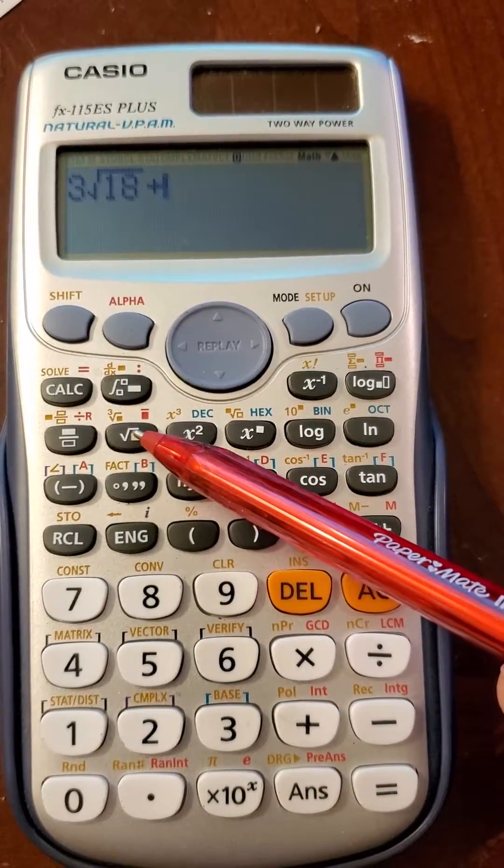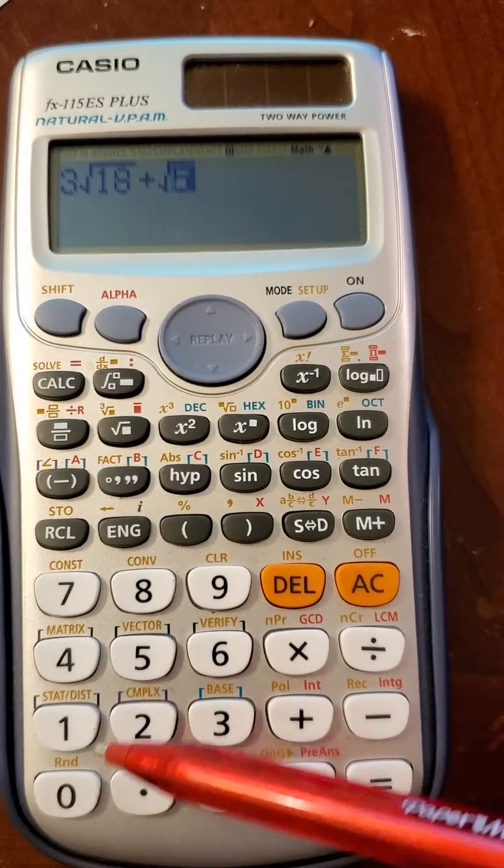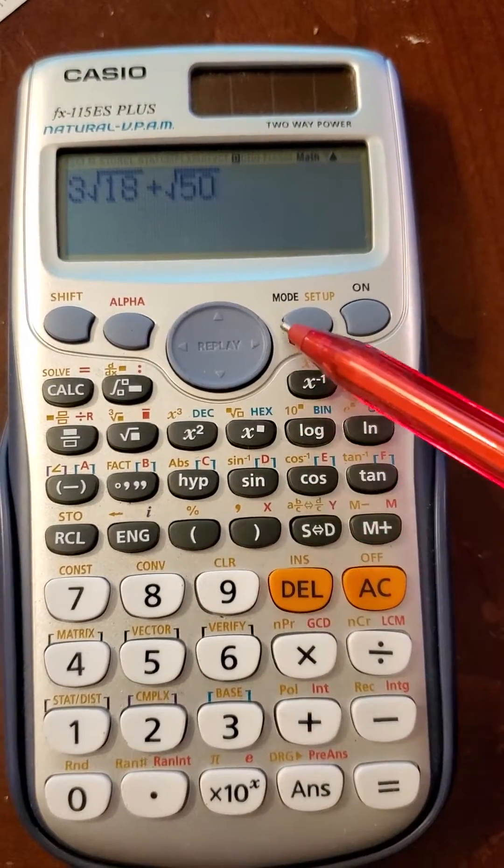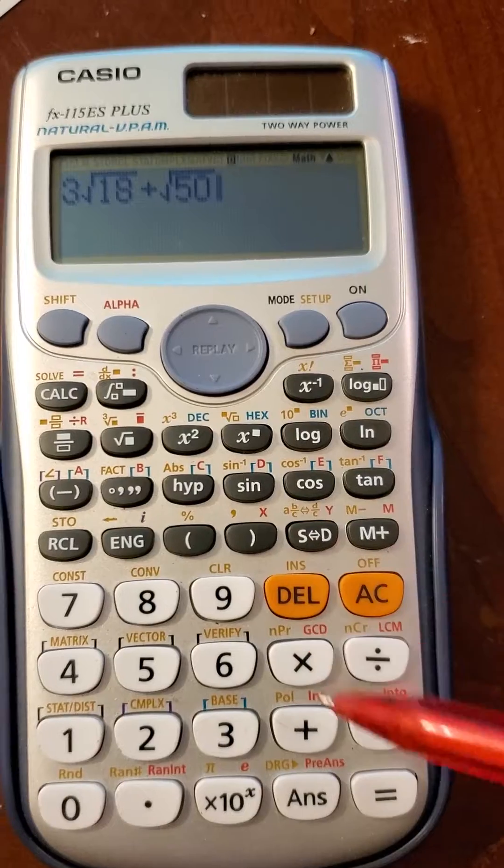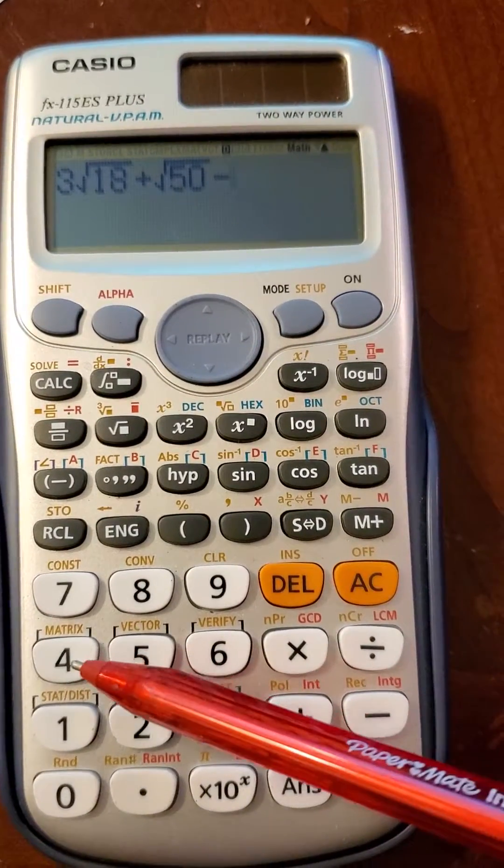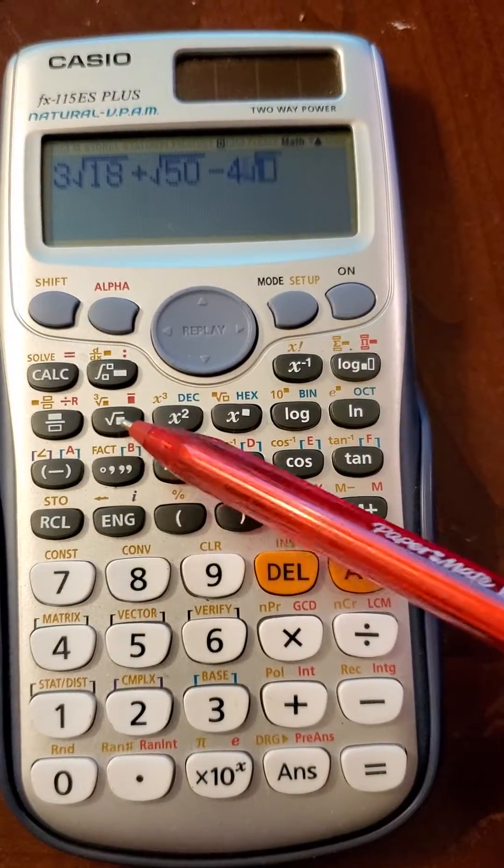We're going to go plus square root of 50. Move over to get out from under the square root, and minus 4 square root of 8.